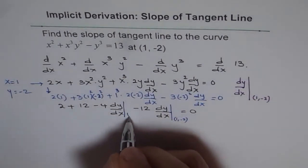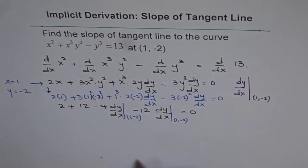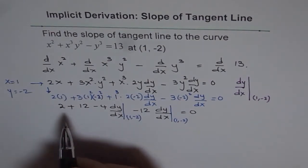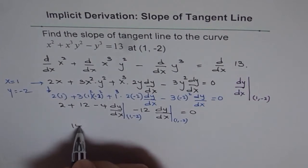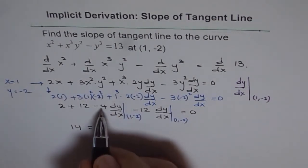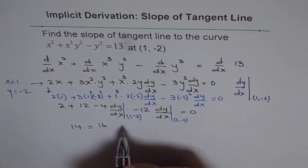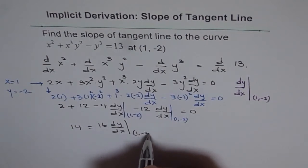is particularly at x = 1, or it is at (1, -2). Remember that part. This is not a general expression. This is the slope of the tangent line at the given point. So we have 2 + 12 which is 14. And I will take these terms to the right side and it becomes 16 dy/dx at the point (1, -2).